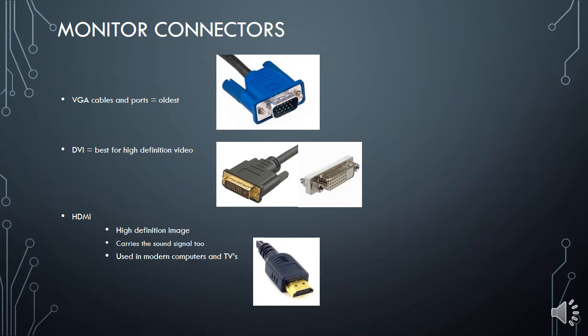Monitor connectors come in different types. VGA is the old type of cable, the same as used in the computer lab. DVI is very good for high-definition video. HDMI is also good for a high-definition image and also carries the sound signal, which is useful — you do not need a separate cable to carry the sound. These connectors are used in modern computers, TVs, and projectors.